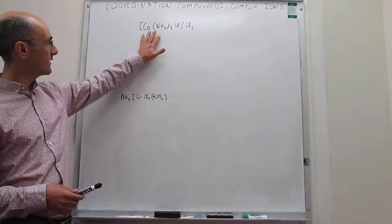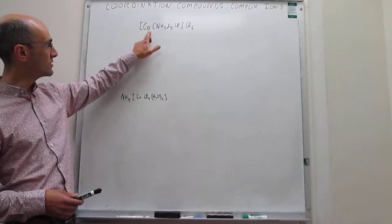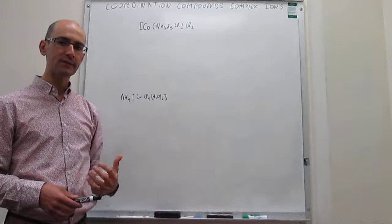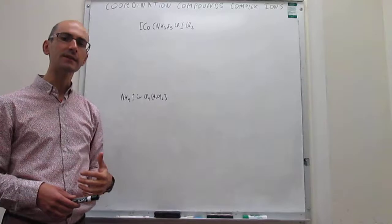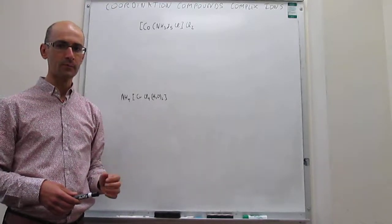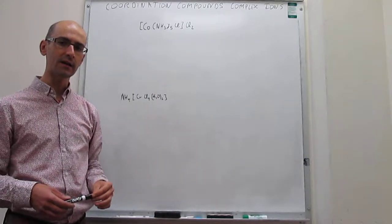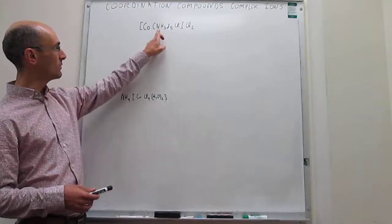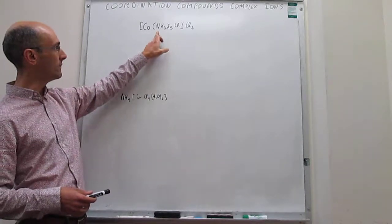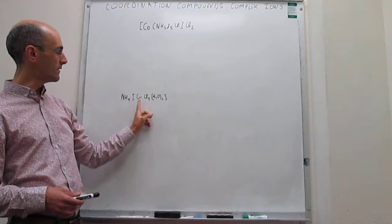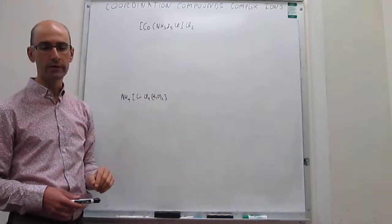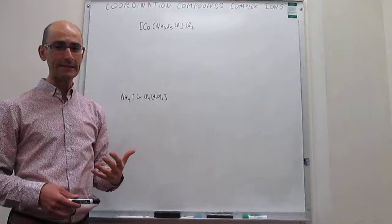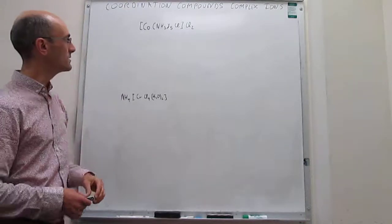In the complex ion, you're going to have the transition metal and then ligands. You first name the ligands, and then the transition metal. When naming the ligands, if you have more than one type of ligand — such as ammonia and chlorine, or chlorine and water — then you're going to name those ligands alphabetically.